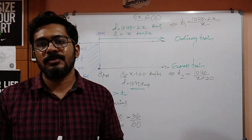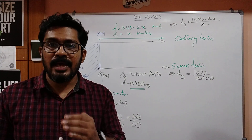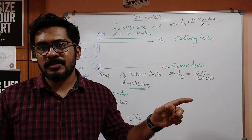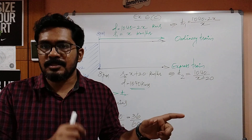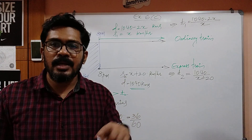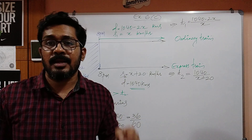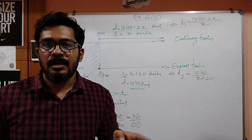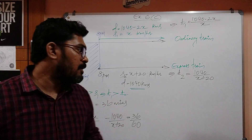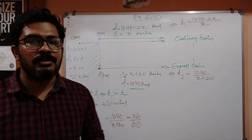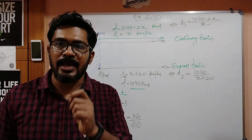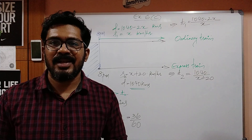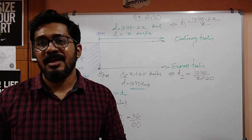Both trains have to cover the same distance of 1040 kilometers. Now, they are asking: if the express train reaches 36 minutes before the ordinary train reaches the station — that is, after covering 1040 kilometers — then what would be the speed of the local train? In other words, find the value of x.